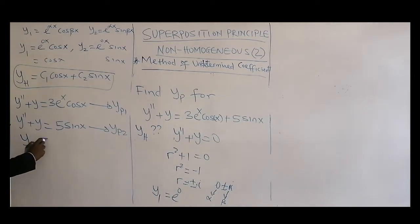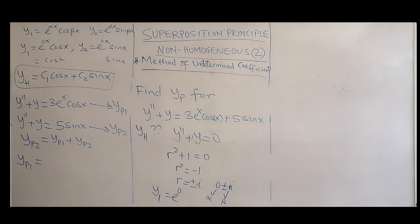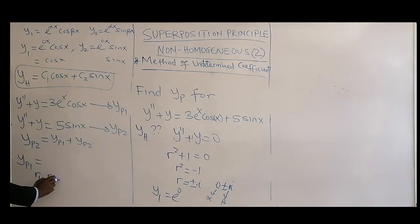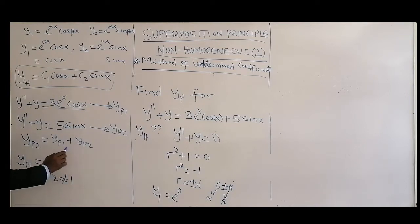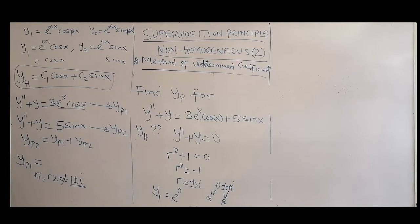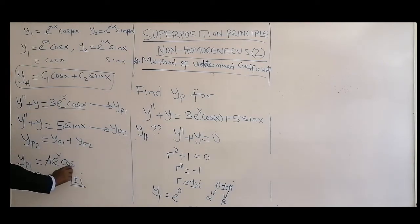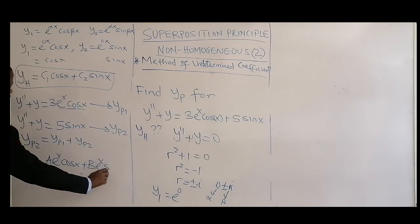Your yp can be superimposed — you can add yp1 and yp2 together. For yp1, you realize that r1 and r2 are not equal to what generates the first function. The roots of the auxiliary equation are plus or minus i. None of the roots of the auxiliary equation match. So the particular solution form, when your equation has an exponential times cosine, is: yp1 = A·e^x·cos(x) + B·e^x·sin(x).